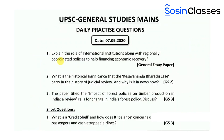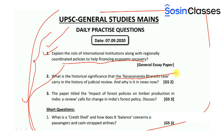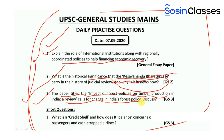Moving to the D&D document — a snapshot is available on the official Sosin Classes website. The questions include: explain the role of international institutions along with regionally coordinated policies to help enhance economic recovery; what is the historical significance that the Keshavananda Bharati case carries in the history of judicial review and why is it in the news now; the paper titled 'The Impact of Forest Policies on Timber Production in India' calls for change in India's forest policy — discuss; and what is a credit shell and how does it balance concerns of passengers and cash-strapped airlines?